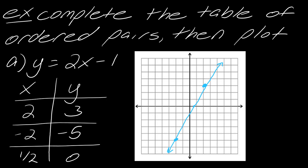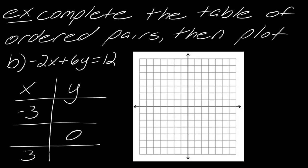Just as an aside: why do we choose three points? It's actually a built-in check. If you have three points that do not line up, it tells you that you made a calculation error somewhere and you can go back and find it. Pause the video here and give this one a try, then hit play when you're ready.